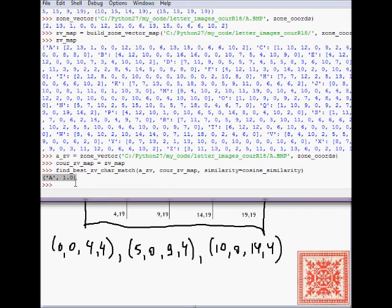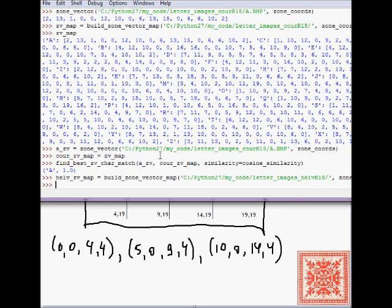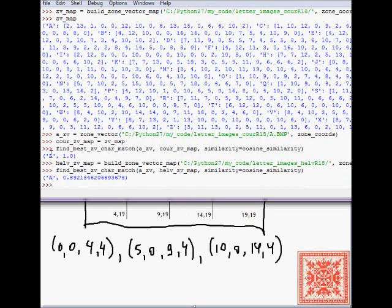Now let's compute the zone vector map for the Helvetica characters. So let me cut and paste this call, save myself some typing. So this is the directory where I have saved Helvetica images. And these are pill font images. And now we can have, let's call find best zv character match again. And let's see what, we're going to match the courier character against the Helvetica zone vector. So it's still A, but the similarity is not 1, but it's still pretty high. So this is the similarity, that's not 1, because of the difference, the font differences.